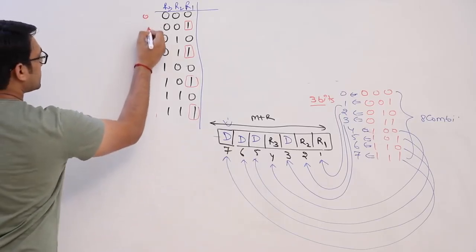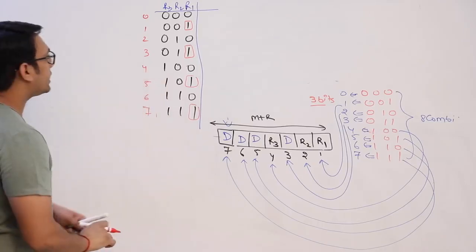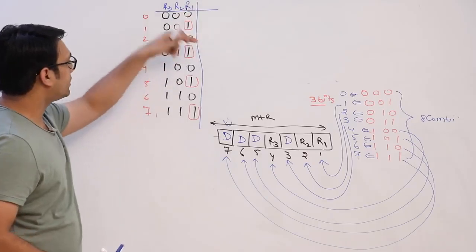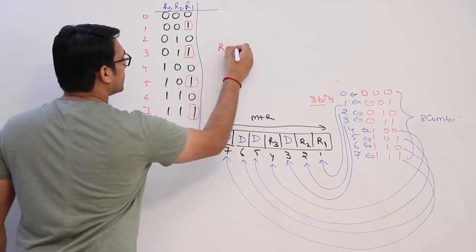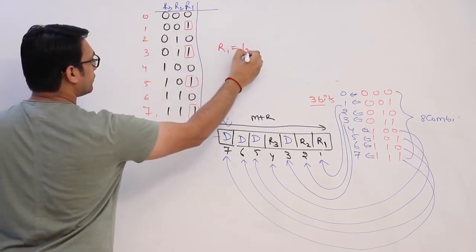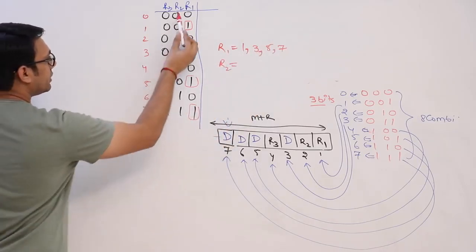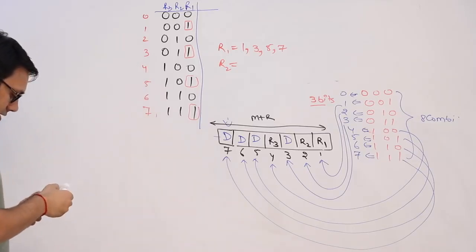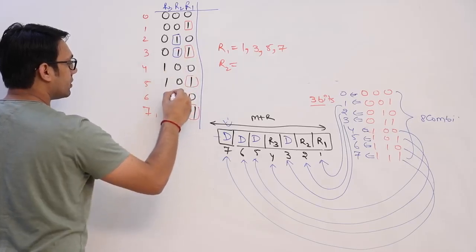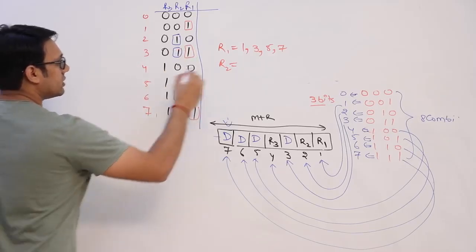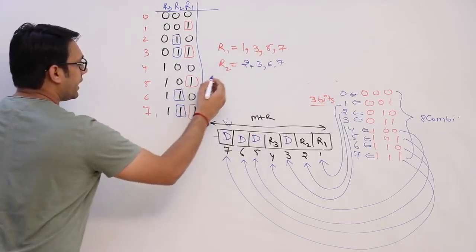Looking at how the redundant bits cover the positions: r1 covers positions 1, 3, 5, and 7; r2 covers positions 2, 3, 6, and 7. The r3 bit covers its corresponding set of positions. This coverage is used for parity checking.